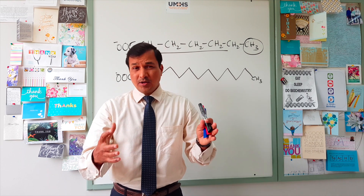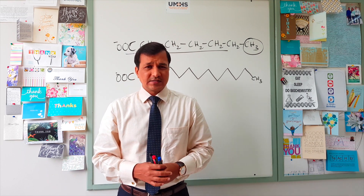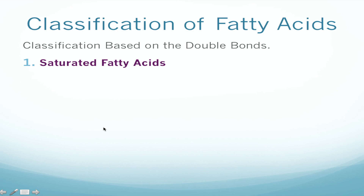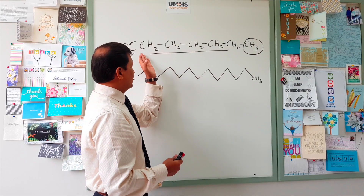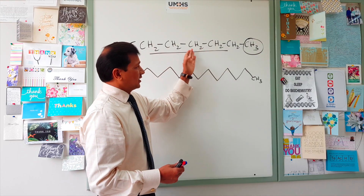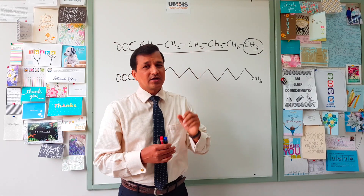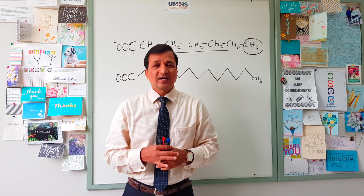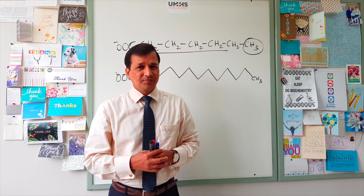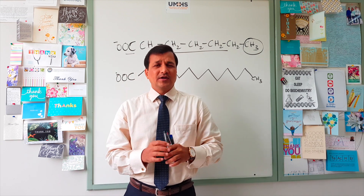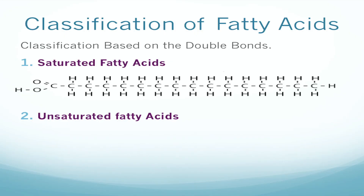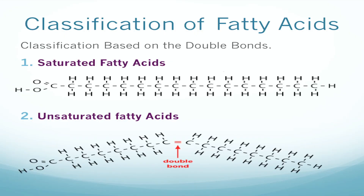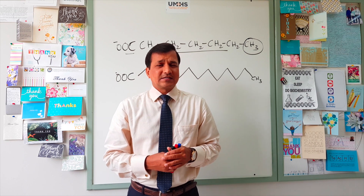If a fatty acid does not have any double bond, we call that a saturated fatty acid — there is no double bond present. If there is a double bond in a fatty acid, that is called an unsaturated fatty acid.